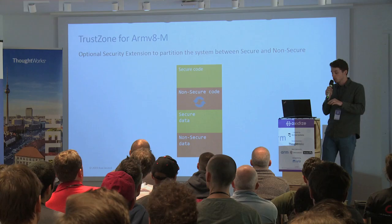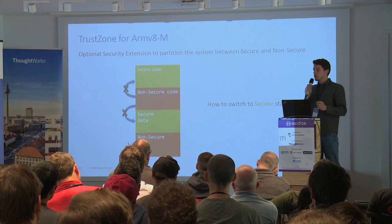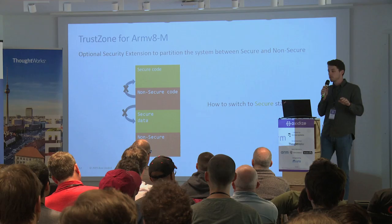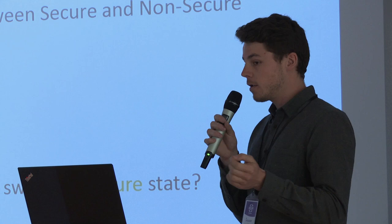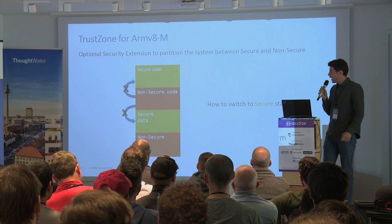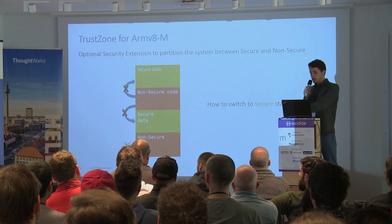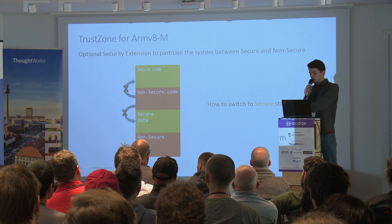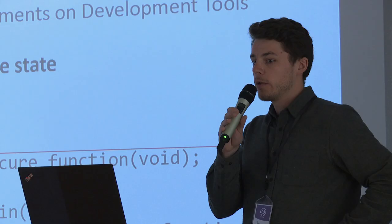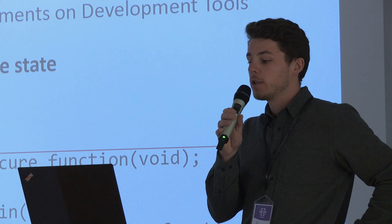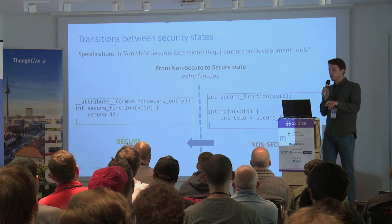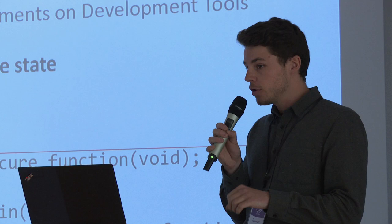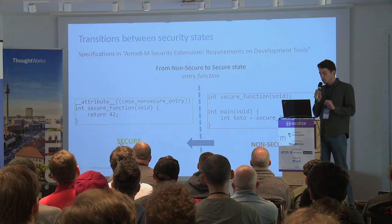At some point, the non-secure code needs to access the assets — to encrypt data or do things which are in secure code. So how to switch to secure state? How can the non-secure state access the secure code? The steps to transition between secure and non-secure states are clearly defined in the ARMv8M architecture reference manual. To make it easier, features have been implemented in languages such as C, which I tried to replicate in Rust. To transition from non-secure to secure state, it's done in C with a function attribute called CMSE non-secure entry. CMSE stands for Cortex-M Security Extension. You put it on top of specific secure functions, and only those entry functions will be the entry points to your secure system from the non-secure side.